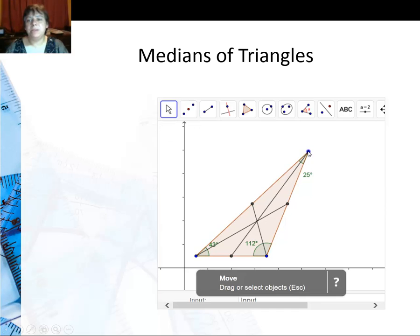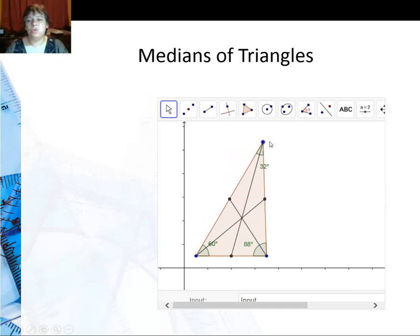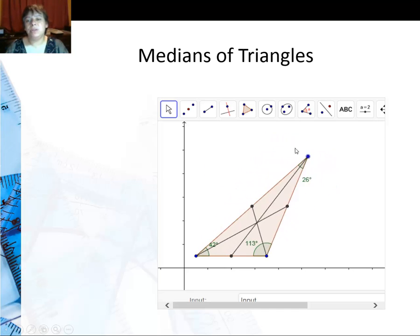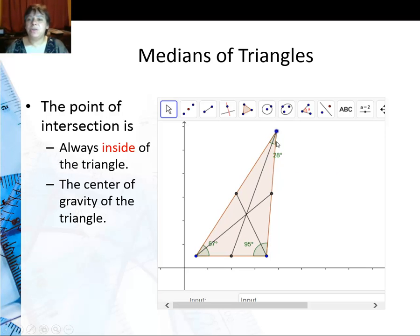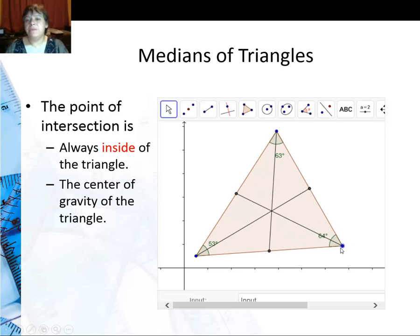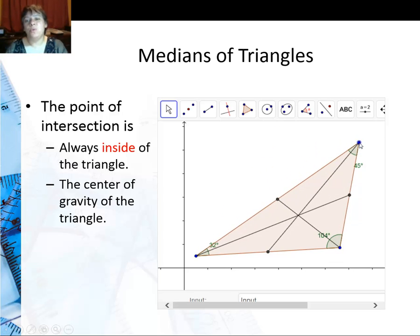If I move these pieces around you can see even when the triangle is right or obtuse it always intersects in the center of the triangle. In fact the point of intersection is always inside of the triangle. And it's actually called the center of gravity of the triangle. Apparently if you were to put a pencil or try to balance this triangle and you supported it right under that point of intersection it would balance.